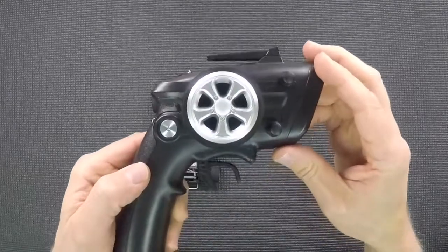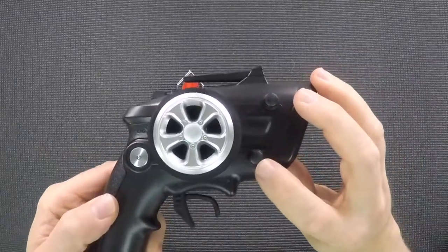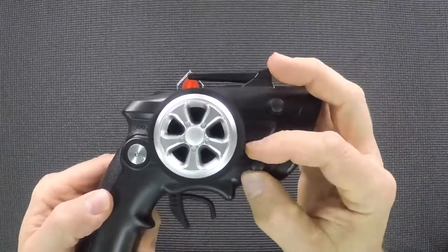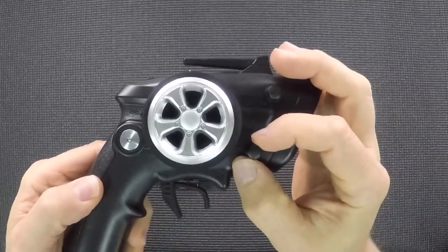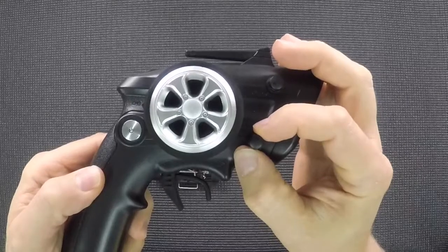First thing you're going to want to do on the transmitter is find the throttle trim knob. That knob will rotate clockwise and counterclockwise. It has a small little arrow. You want to set that knob to about the 2 o'clock position, just like that.